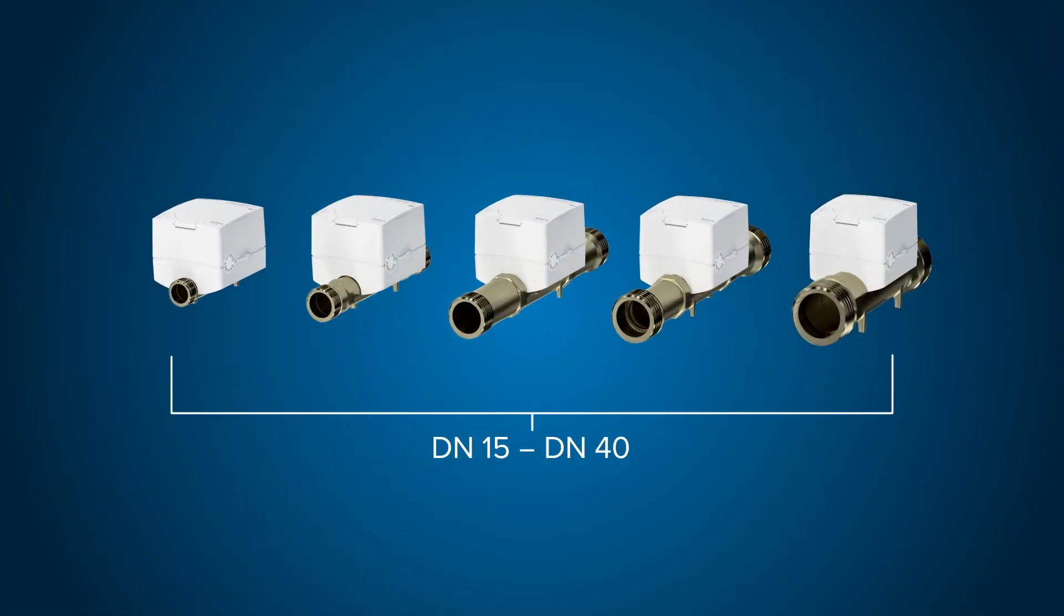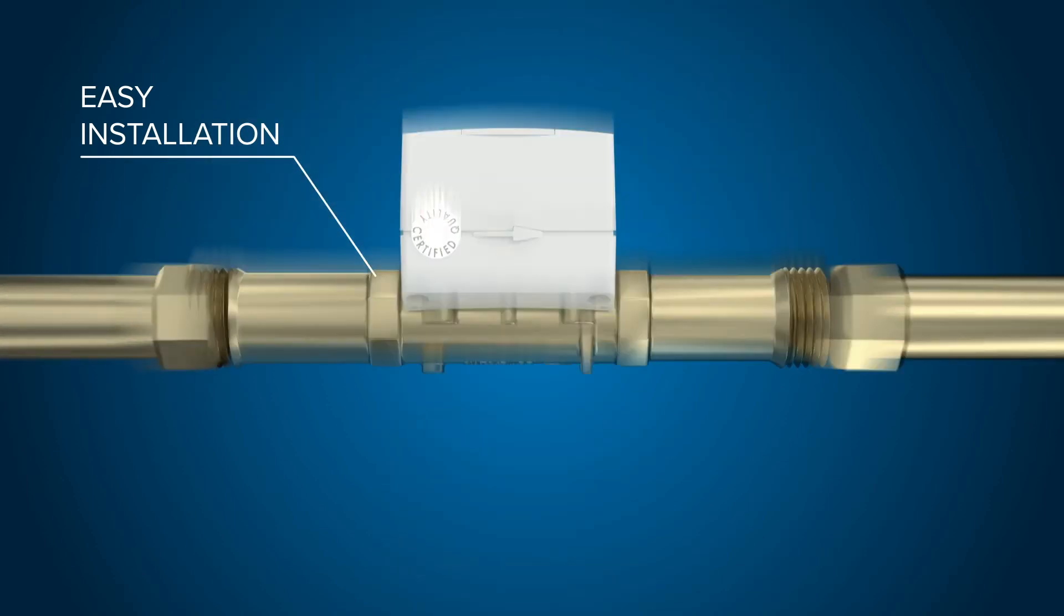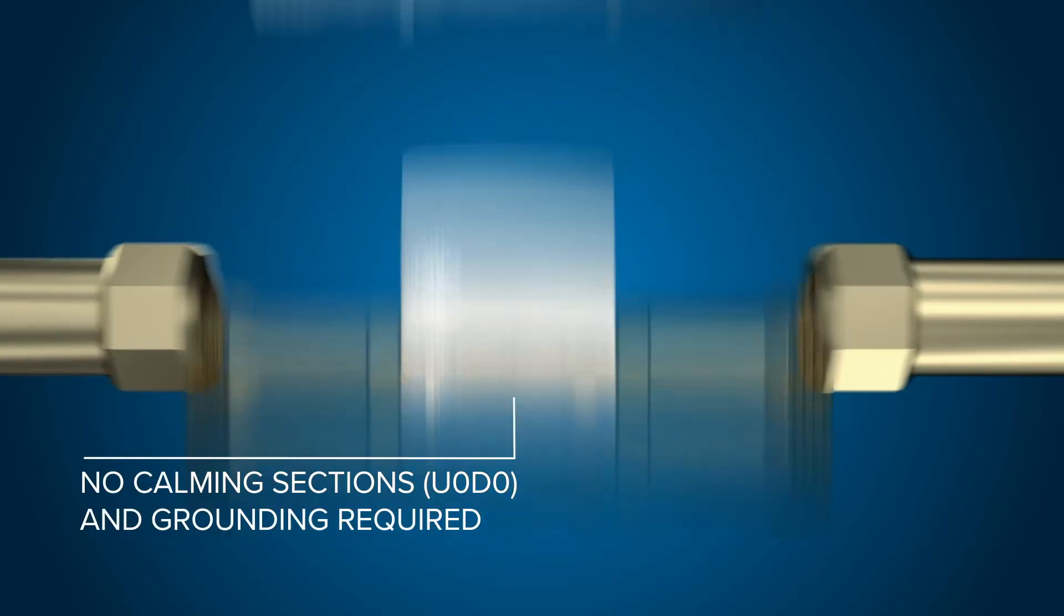The complete DN range comes with all common body lengths. With its compact size and robustness due to brass, you always get the right meter for your installation situation. Calming sections and grounding are not required.